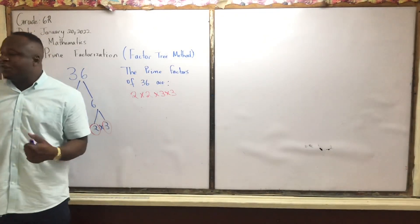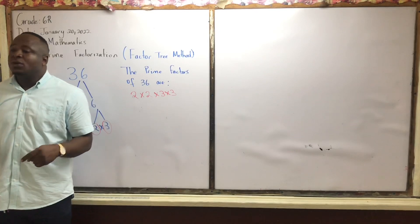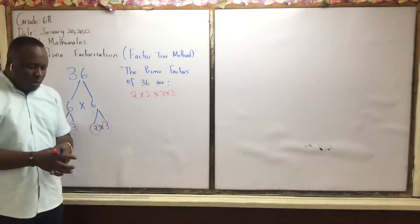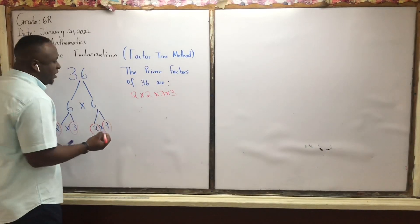If you were asked, what are the prime factors of 36, what would you say? 2 and 3. 2 and 3. What this is, how it's written out. And you can go even further.